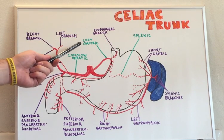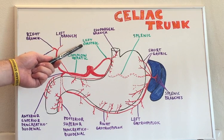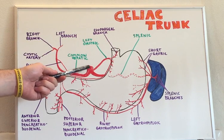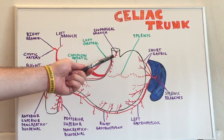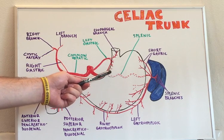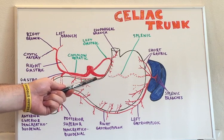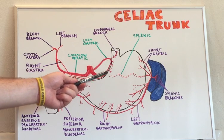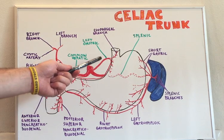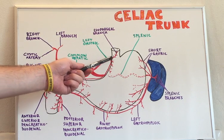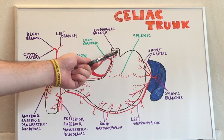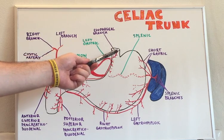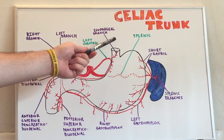We'll start with the left gastric. The left gastric branch branches off the celiac trunk and has its distribution around the lesser curvature of the stomach. It also has its own branch, the esophageal branch, which goes all the way up towards the esophagus.